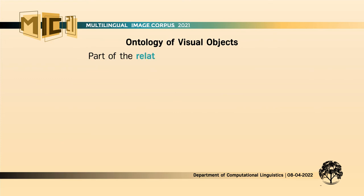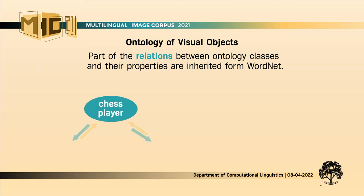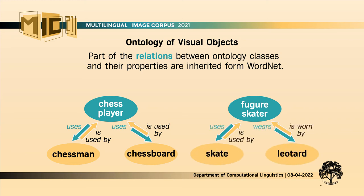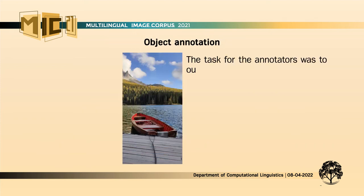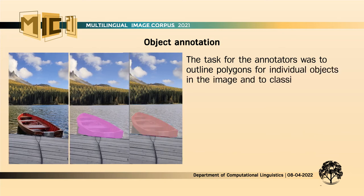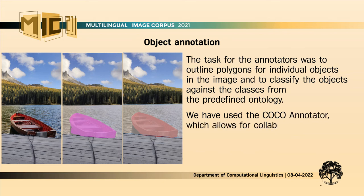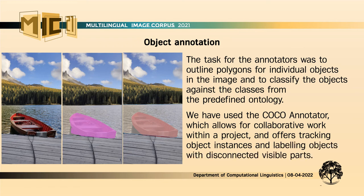Part of the relations between ontology classes and their properties are inherited from WordNet. Additional classes and relations are included in the ontology when not explicit in the WordNet structure, for example: uses, is used by, wears, is worn by, and so on. The task for annotators was to outline polygons for individual objects in the image — either by approving or correcting the automatic segmentation or by creating new polygons — and to classify the objects against classes from the predefined ontology. The COCO Annotator was used, which allows for collaborative work within a project and offers tracking of object instances and labeling of objects with disconnected visible parts.